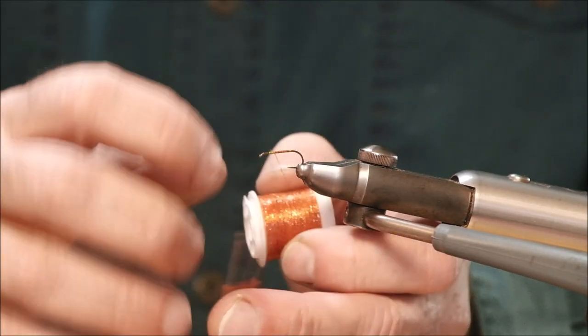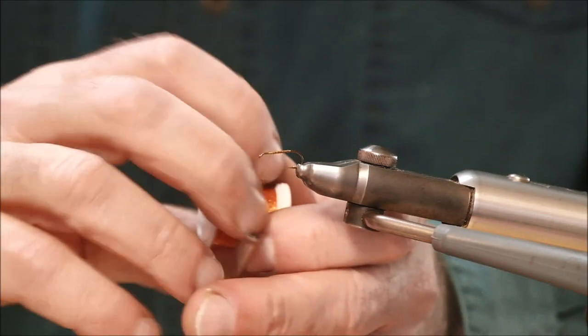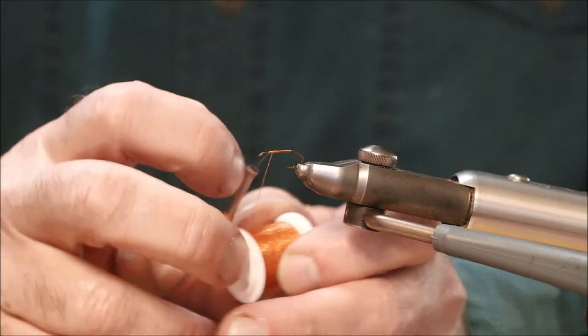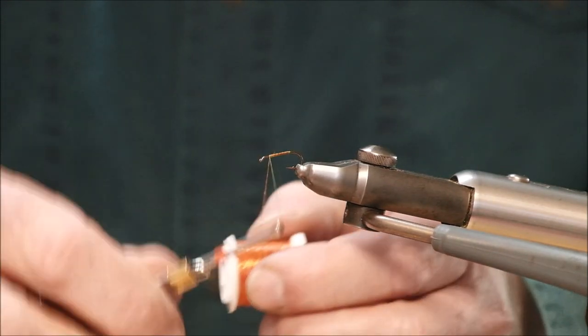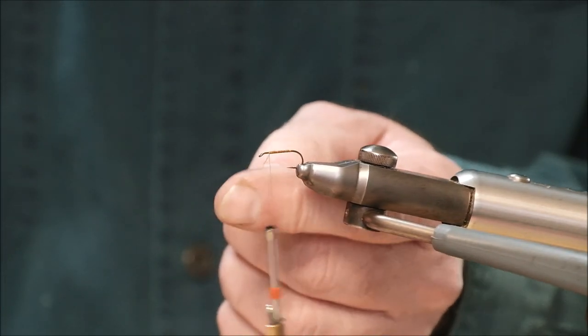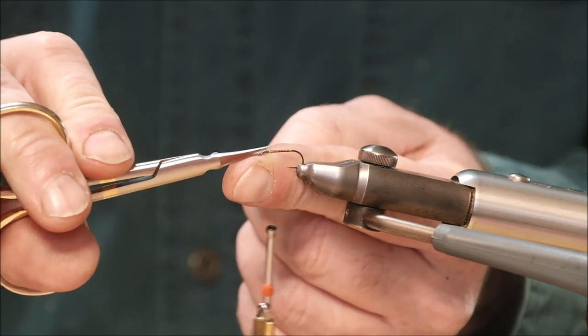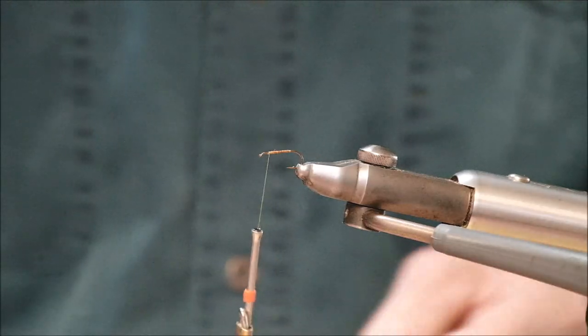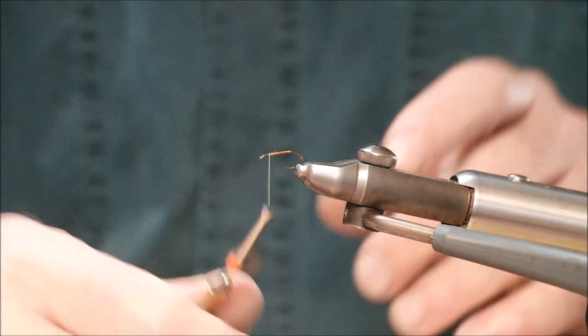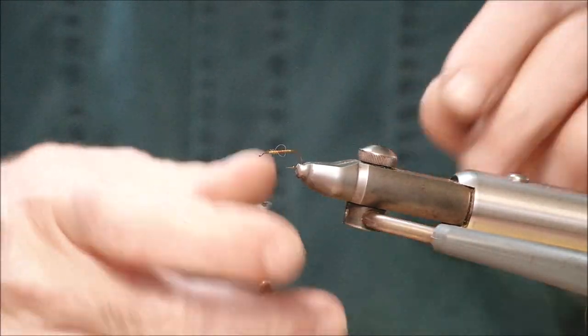I like this stuff. I've been tying a lot of flies with this stuff and they've been really successful. It gives a nice glistening, juicy effect to the body of a fly. This is orange, I think, this color. Just really nice. I really like that stuff.